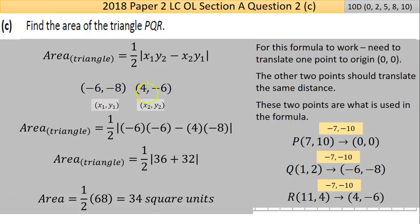Let's go through it. That's your formula written out here. These two points are found by translating. I took P and translated to the origin. It went down 7 on the x—7 x units—and then 10 y units. So the other two points Q and R will move the same, and they end up with these two new coordinates: (-6,-8) and (4,-6).